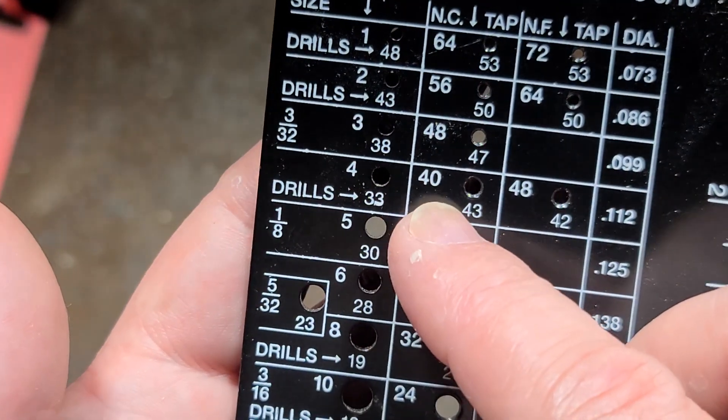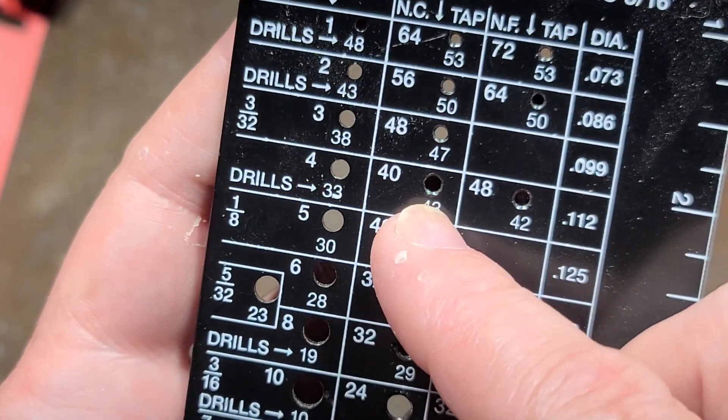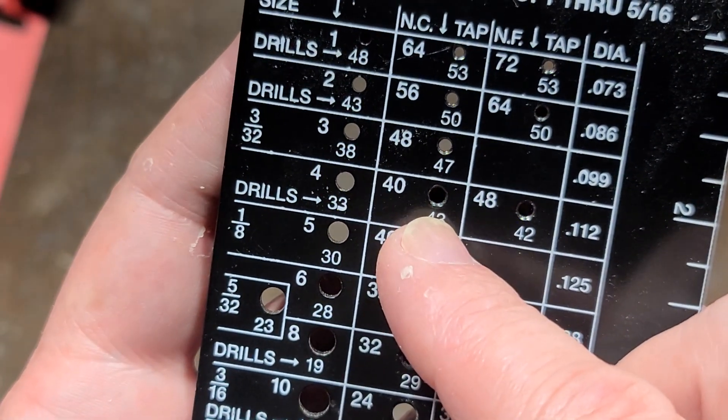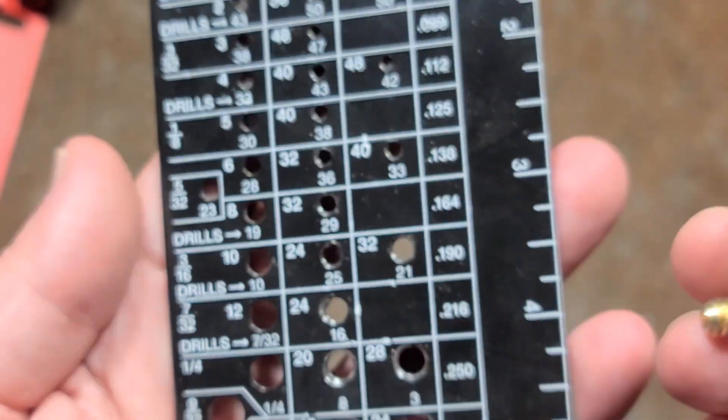If you want to do a 4-40 thread, which is also a common fine thread, number 33 for a pass through, number 43 drill for the coarse thread tapping, and the number 42 thread drill for fine thread tapping.